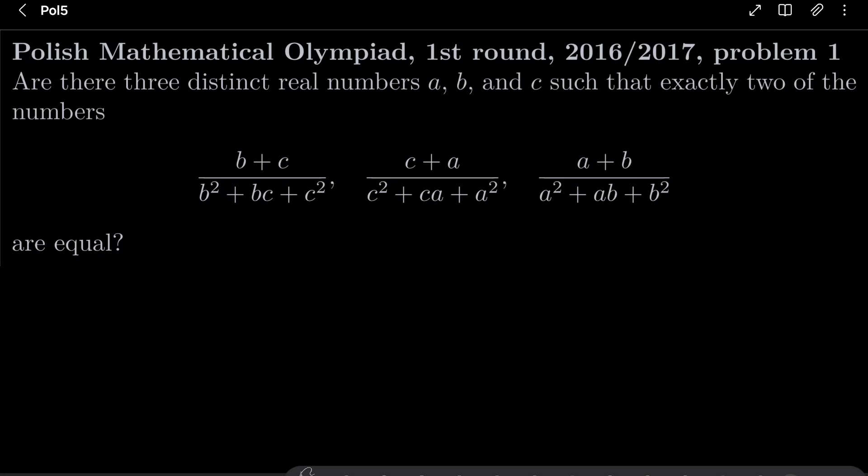Are there three distinct real numbers a, b and c, such that exactly two of the fractions (b + c)/(b² + bc + c²), (c + a)/(c² + ca + a²), and (a + b)/(a² + ab + b²) are equal? Are there such numbers a, b and c distinct?